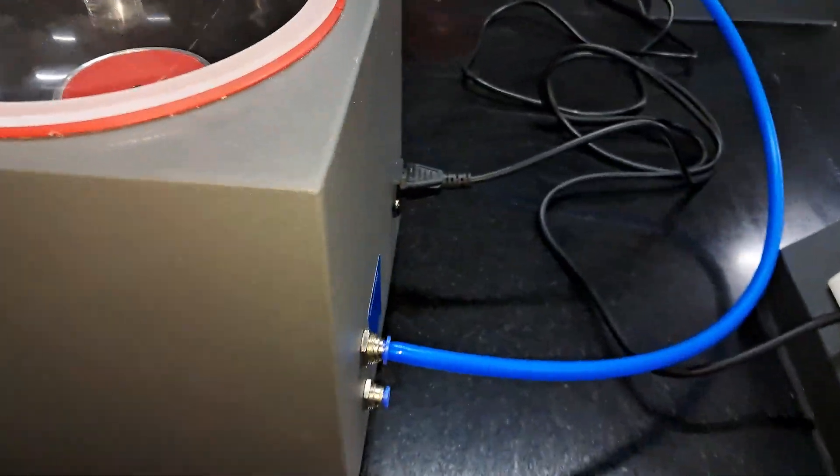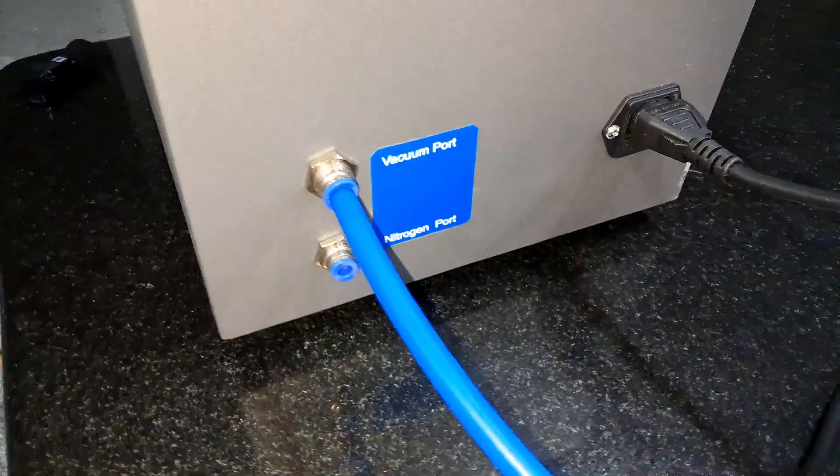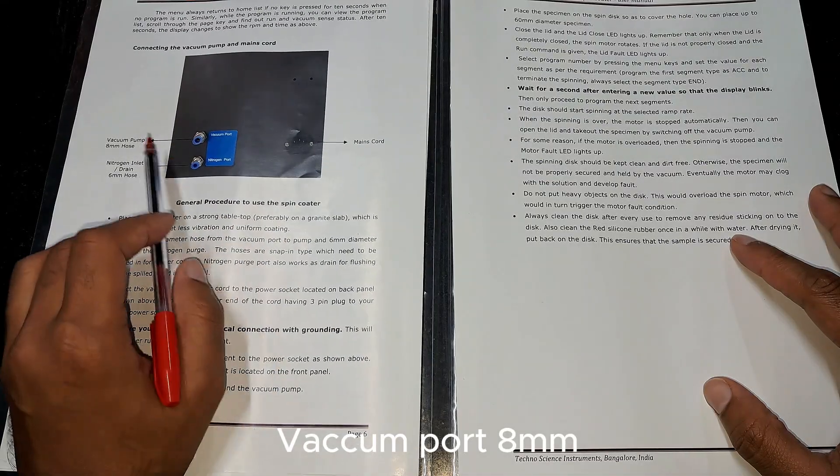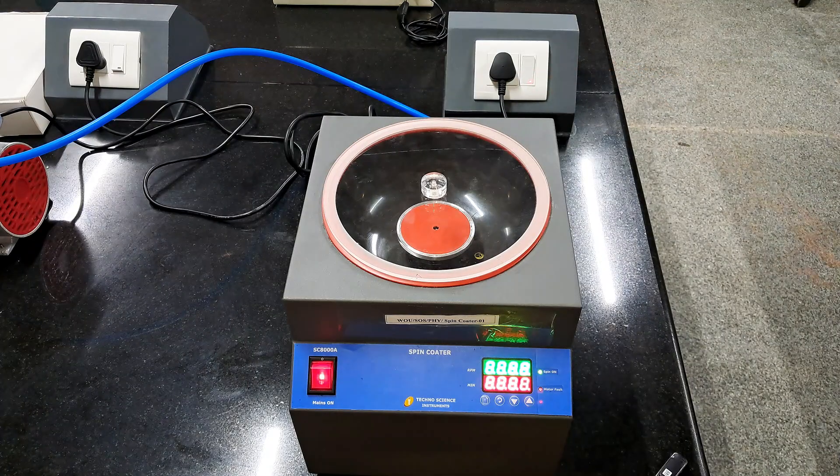The vacuum pump has been connected to the spin coater with this 8mm hose pipe. So at first I will switch on the machine.